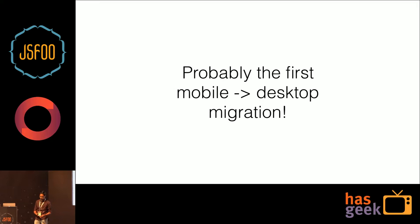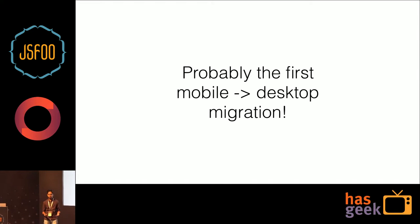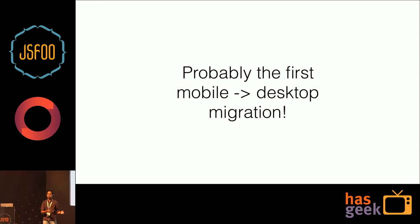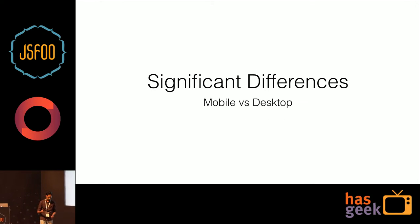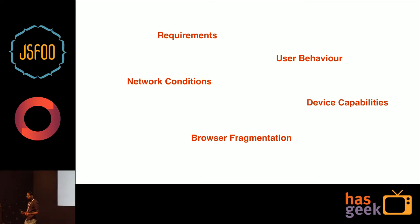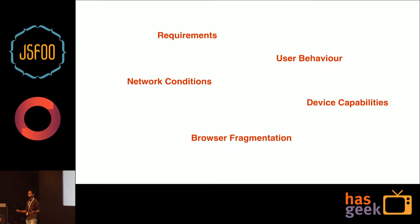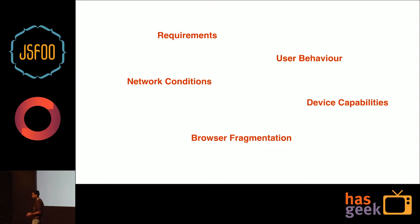Most companies or websites have a desktop version first and then sort of build a mobile version for that — a light version or responsive version. I haven't heard of a lot of cases where you develop a mobile stack first and then migrate to desktop. What happened here is that we learned there are some significant differences in how mobile works and how desktop works. It's not just the tech stack — the requirements are different, user behavior is different, form factors are different. People use desktops during the day and mobiles more during the evening or night. Device capabilities are obviously different — desktops are still more powerful, especially for multi-threading and core processing power.